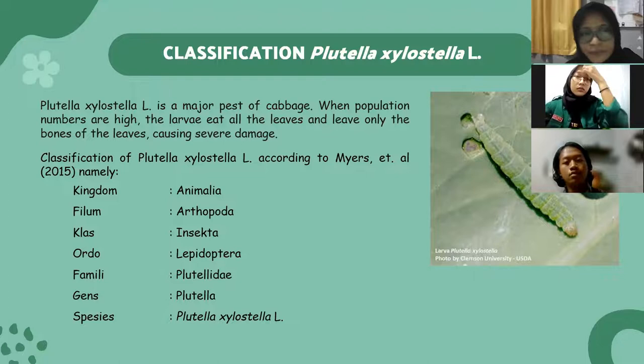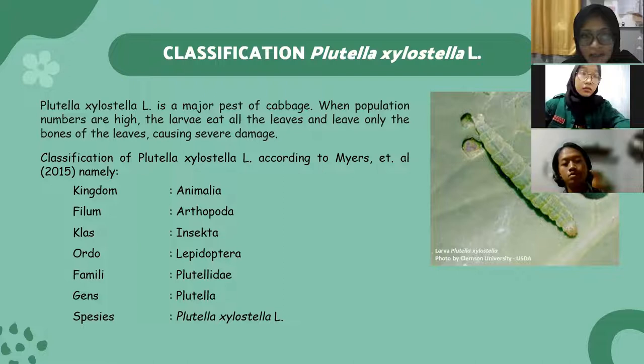The first topic is the classification of Plutella xylostella. Plutella xylostella is a major pest of cabbage. When population numbers are high, the larvae eat all the leaves and leave only the veins of the leaves, causing severe damage.